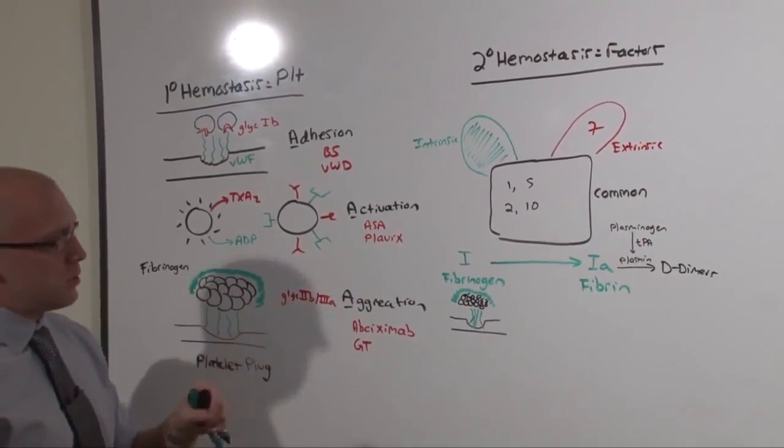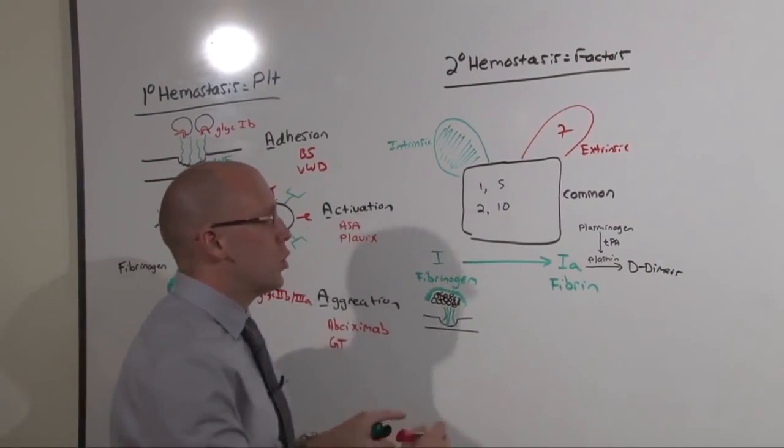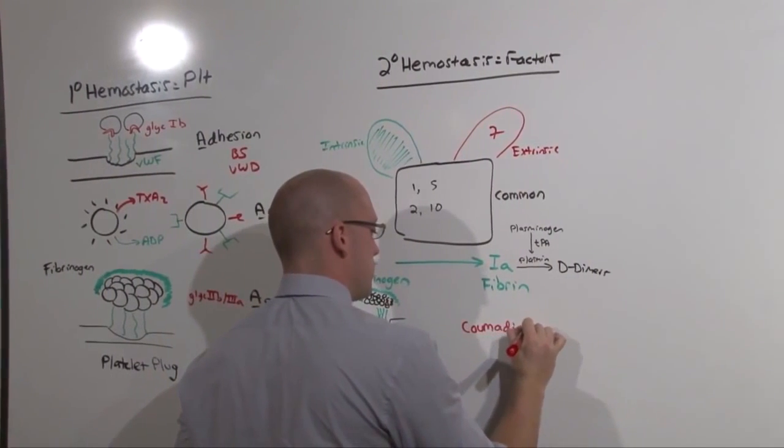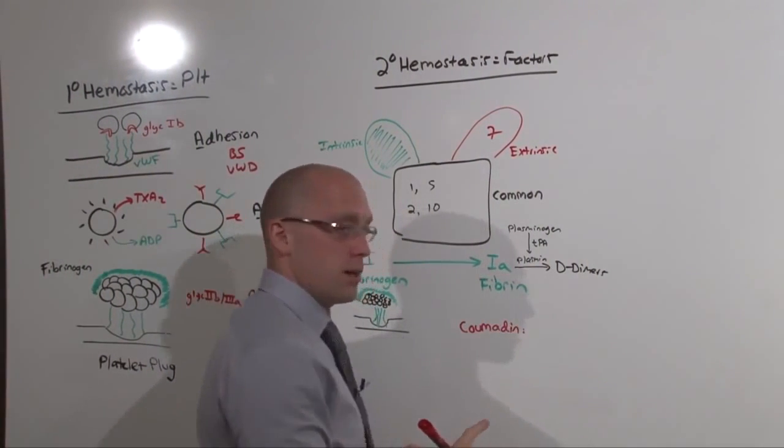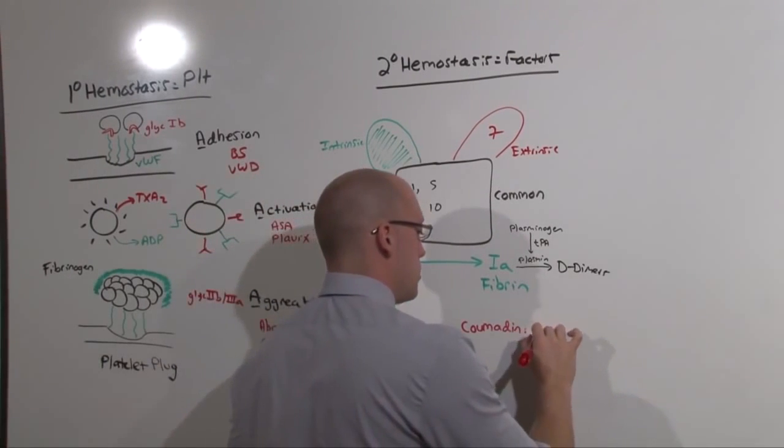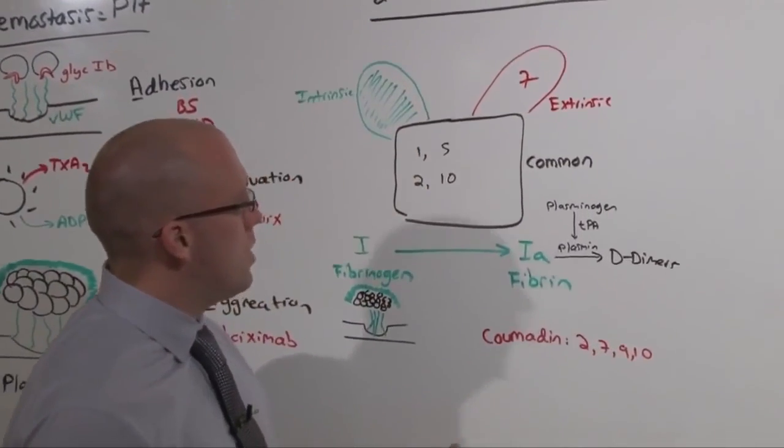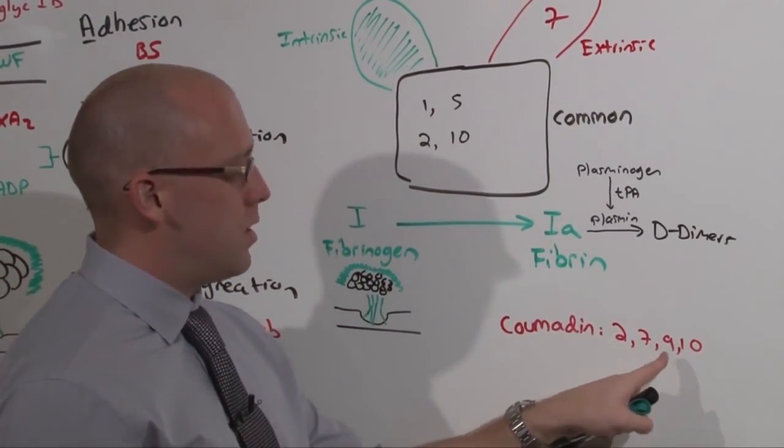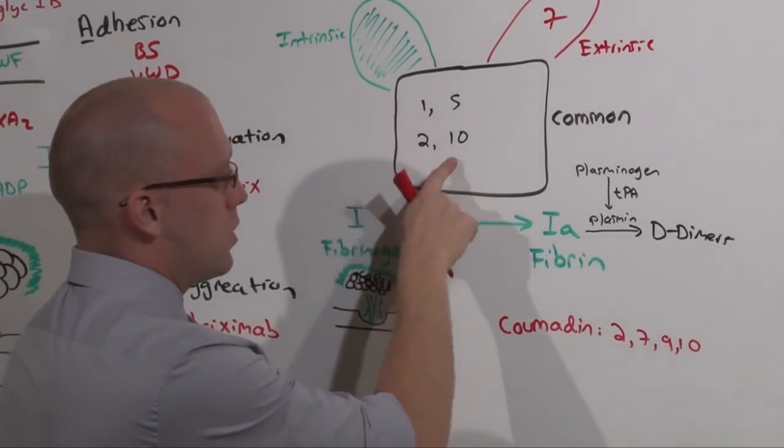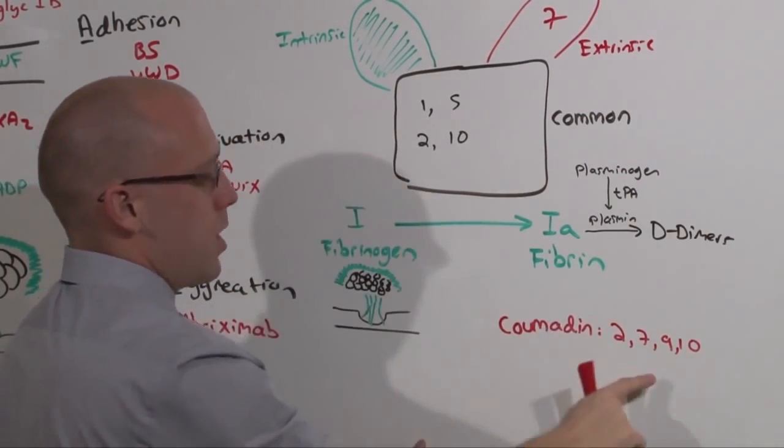Over in secondary hemostasis, a common medication we use is Coumadin. Coumadin inhibits vitamin K epoxide reductase, an enzyme in the liver that helps the liver make 2, 7, 9, and 10. So if you inhibit 2, 7, 9, and 10, Coumadin blocks both the common pathway at 2 and 10, the extrinsic pathway at 7, and the intrinsic pathway at 9.